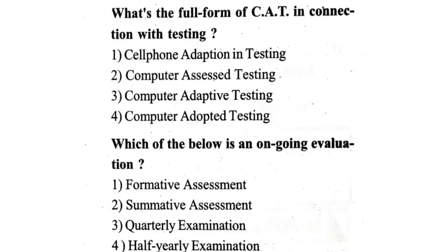Next question: What is the full form of CAT in connection with testing? First one, cell phone adoption in testing. Second one, computer assisted testing. Third one, computer adaptive testing. Fourth one, computer adopted testing. The correct answer is third one — computer adaptive testing.